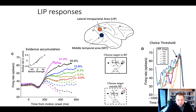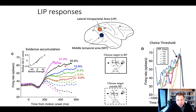In the 0% direction, we can see an upward motion, but the decision would be wrong. When it's exactly in the opposite direction — outside the receptive field — we see a decrease in firing rates. This evidence accumulation in area MT and LIP seems related to the difficulty of the task, or the strength of evidence supporting the direction of motion encoded by the neuron.